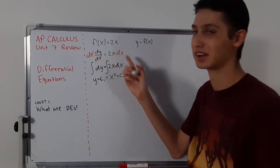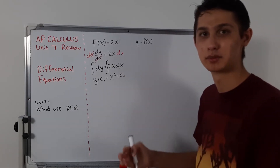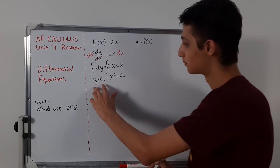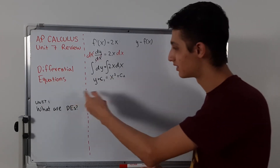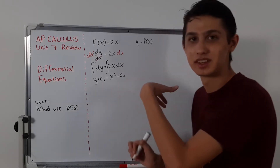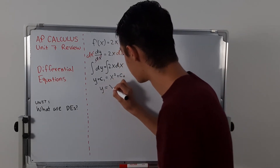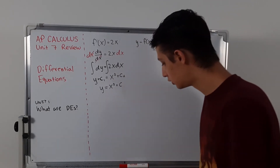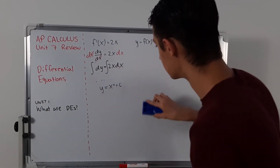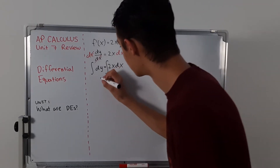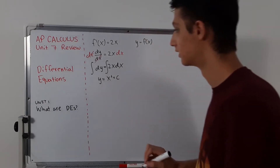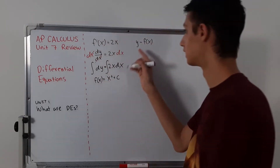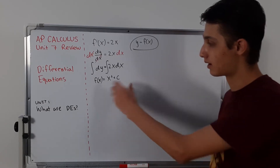We're doing this whole process because it gets harder in a few minutes — we need to learn it. A constant minus another constant just gives us yet another constant, so we can simplify to y equals x squared plus c. You can skip the middle step and go straight to y equals x squared plus c, or equivalently f of x equals x squared plus c.